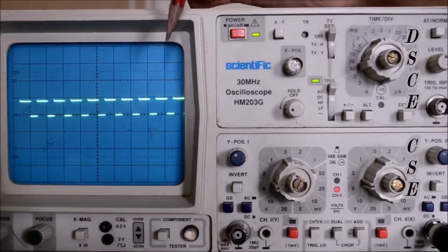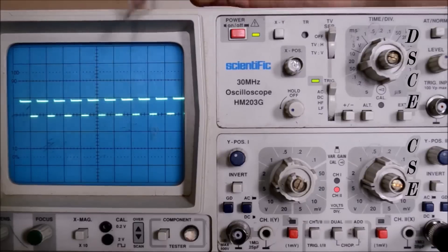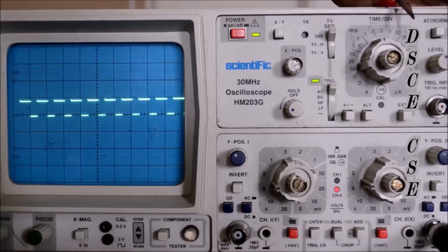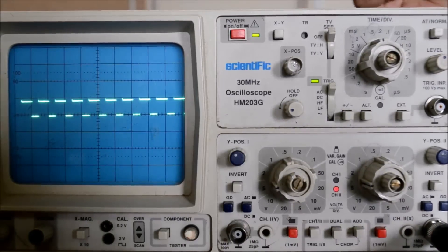For the T_off time, it is covering approximately 2 boxes. So take it as 0.4 into time per division 0.5. So T_off time will be 0.2 milliseconds. The total time period will be 0.4 plus 0.2, that is 0.6 milliseconds.